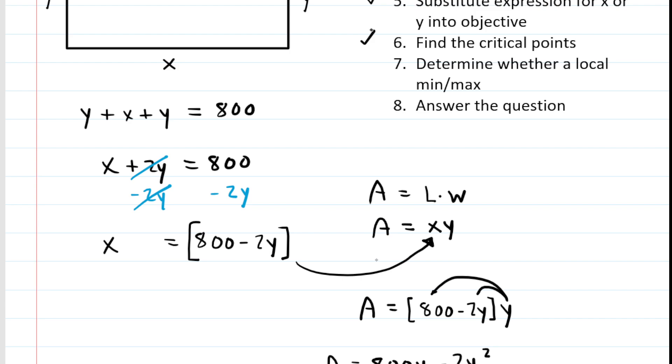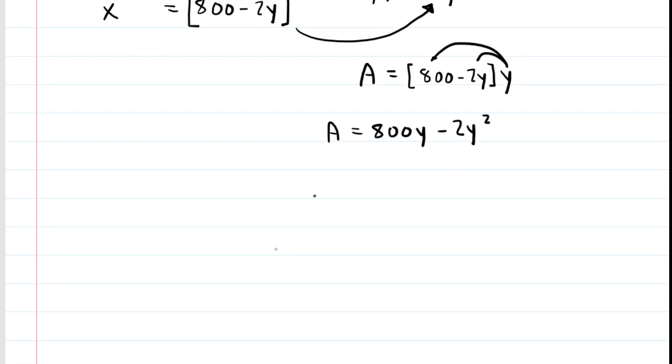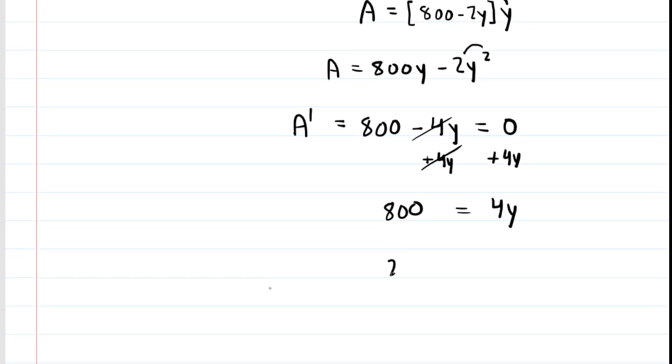We're ready for step six, which asks us to determine the critical points. Critical points are the points where the derivative equals zero. We need to compute the derivative, which we'll call A prime. Using basic derivative rules, the derivative of 800y is 800, and using the power rule for the next term gives us 4y. So A prime equals 800 minus 4y. Finding critical points requires us to set the derivative equal to zero and solve for y. Adding 4y to both sides and dividing by 4 gives us y equals 200. At this stage, we don't know whether this value minimizes or maximizes the area, so we have to test it.